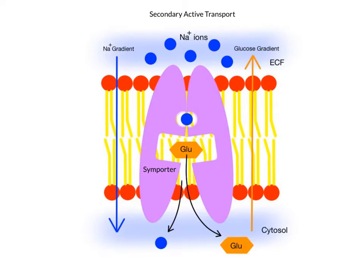In secondary active transport, the energy stored in a sodium or hydrogen ion concentration gradient drives the movement of another solute across the membrane against its own concentration gradient. The original sodium ion gradient is established through primary active transport and ATP hydrolysis. Secondary transport uses the energy generated from this sodium ion gradient, so there is no need for more ATP hydrolysis.